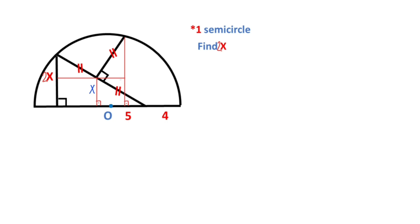These two sides are parallel, that means these angles are 90 degrees. And then let's call here alpha and here theta. Therefore, this angle here must be equal alpha, and this angle must be equal theta. Here is x and this part is also x, because of the mid-segment.